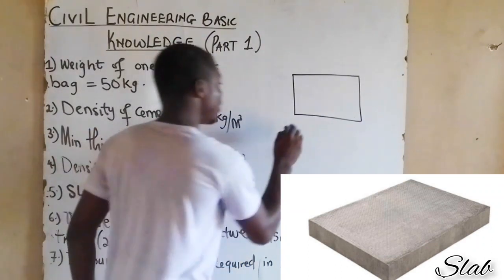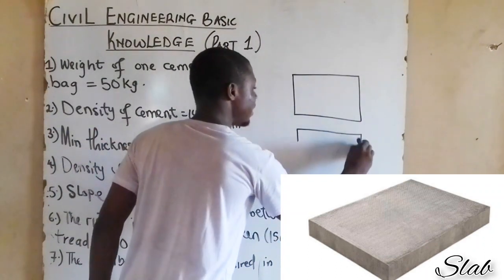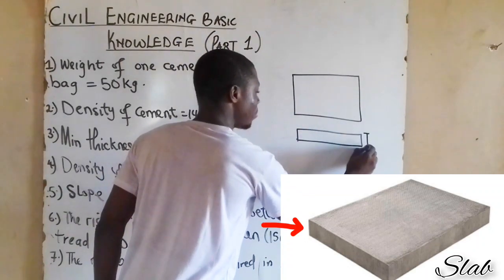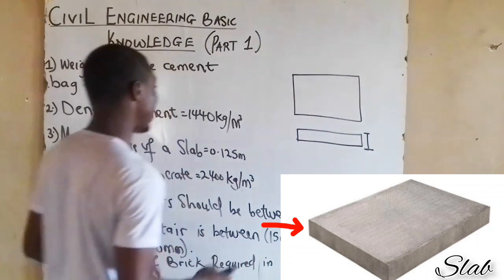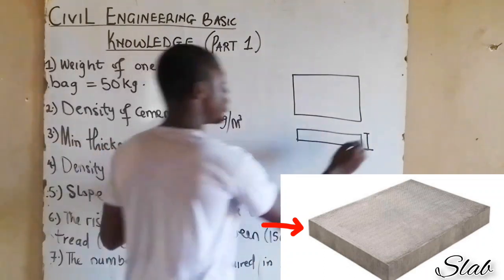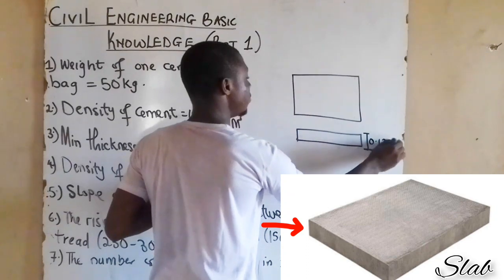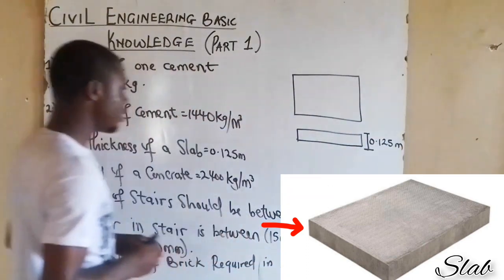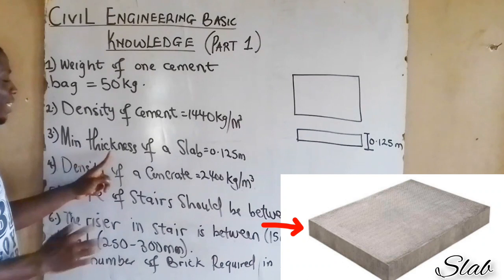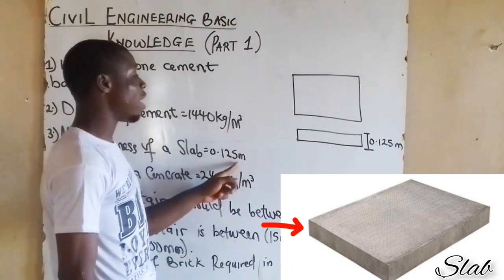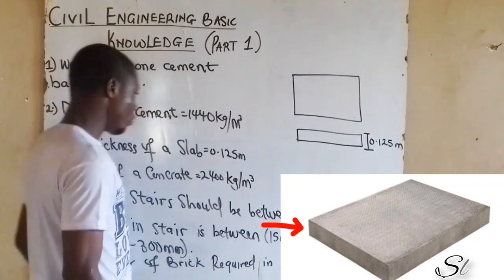So we are saying that the thickness of that slab must be 0.125 meter. As you can see, the minimum thickness of a slab is 0.125 meter.